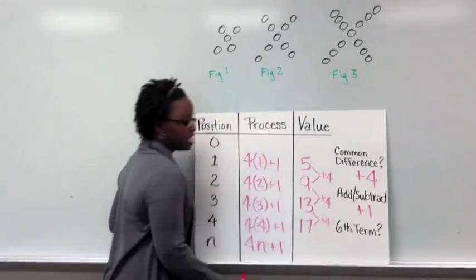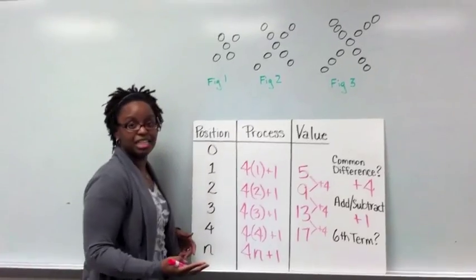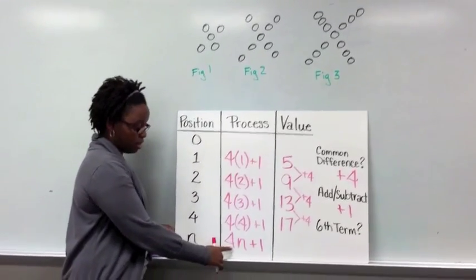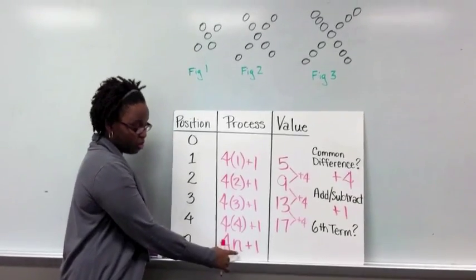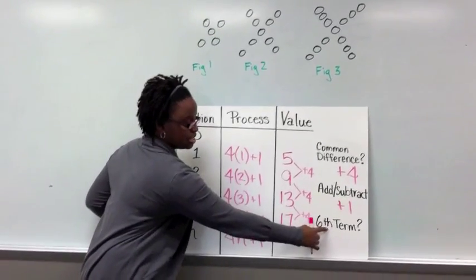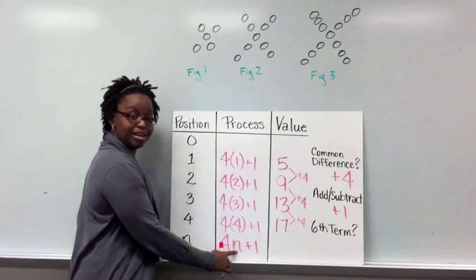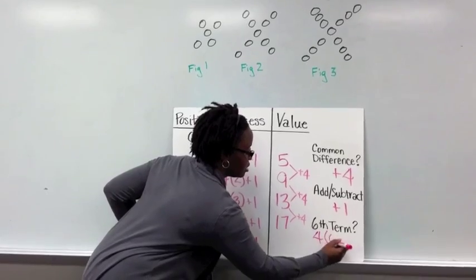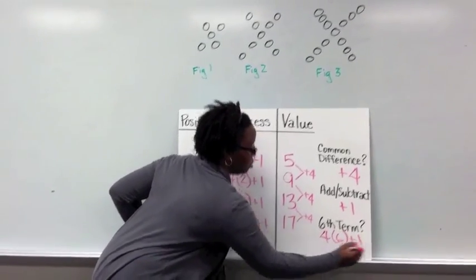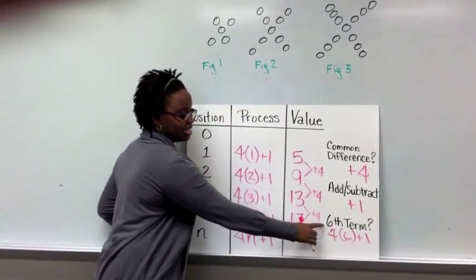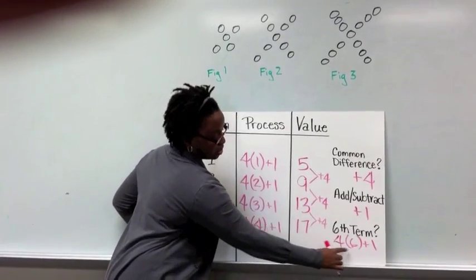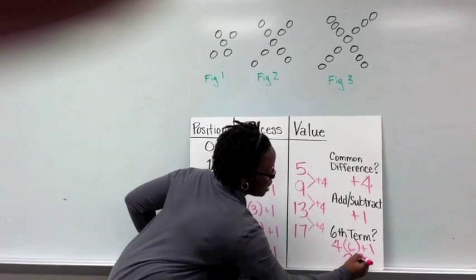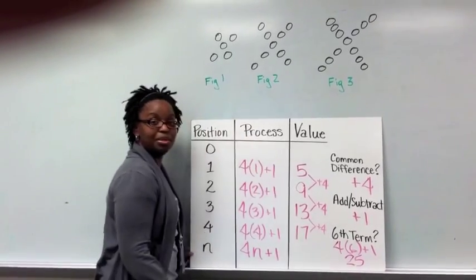And say we wanted to find the value of the 6th term. All we would do is take the rule that we have come up with, 4 times n. Well, in this case, we're looking for the 6th term, so we're going to plug in a 6 there for our position. So 4 times 6 plus 1 would tell us that the 6x would take, 4 times 6 is 24, plus 1, so it would take 25 pebbles to complete that x.